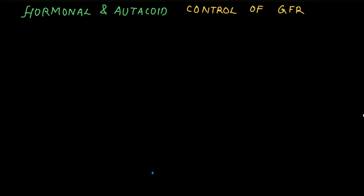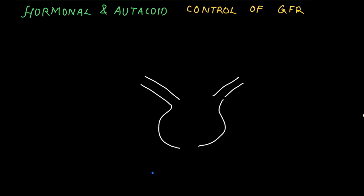Good day to all of you. In this video I am going to talk about the role of hormones and autocoids in the control of glomerular filtration rate. This is the efferent and afferent arteriole and the Bowman's capsule. I'm going to talk about four agents: the sympathetic nervous system, angiotensin 2, prostaglandins, and nitric oxide.